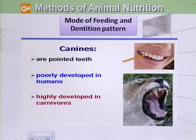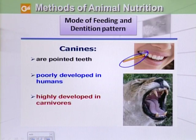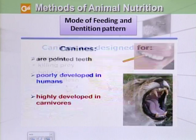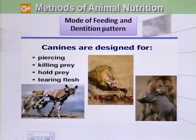Now we will see the effect of the mode of feeding on dentition patterns and examine various teeth types. Number one is canines. These are pointed teeth, and in humans they are poorly developed, while they are highly developed in carnivores. They are used for killing prey, holding prey, and tearing the flesh of their prey apart.